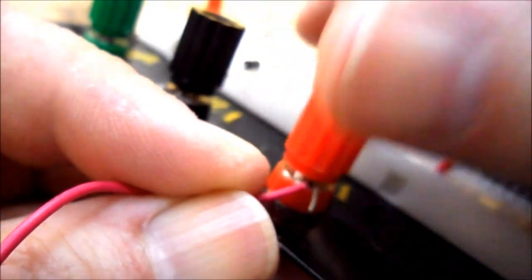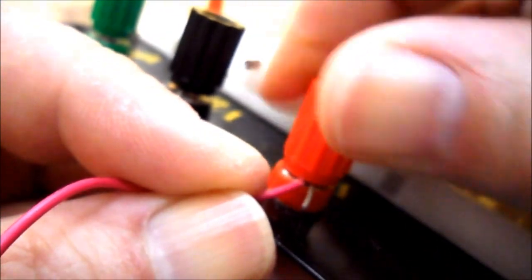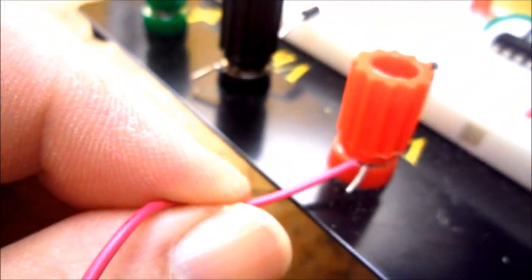So that when you tighten this up, it makes a good, tight connection, and doesn't pull out. You also want to make sure that you can see a little bit of the wire showing.